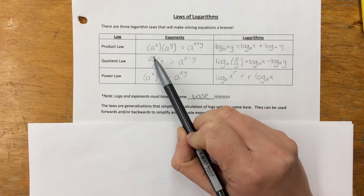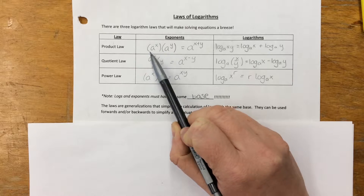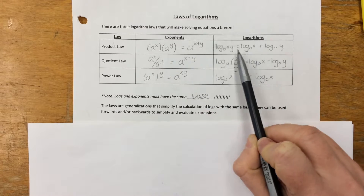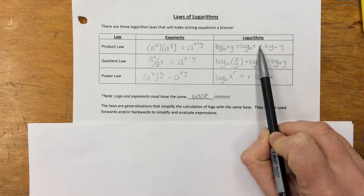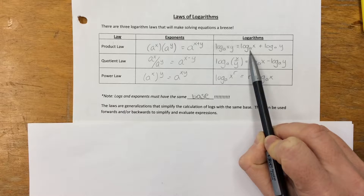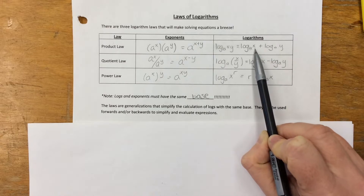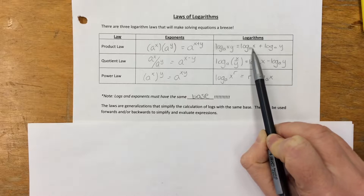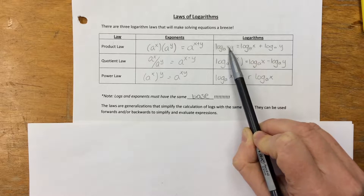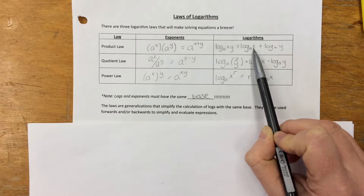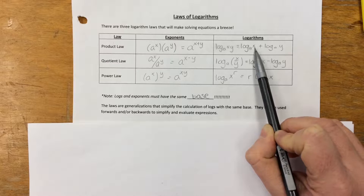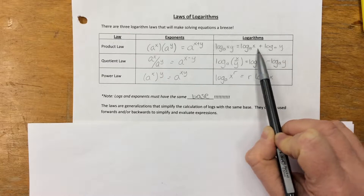So the product law with exponents: when you have two powers of the same base, you add the exponents — so a to the x plus y. In logarithms, if you have two logarithms with the same base — the base is that subscript number — then you multiply together. So if you have log base a of xy, you can break that out into log base a of x plus log base a of y. Or if you're given log base a of x plus log base a of y, you can multiply those two together.